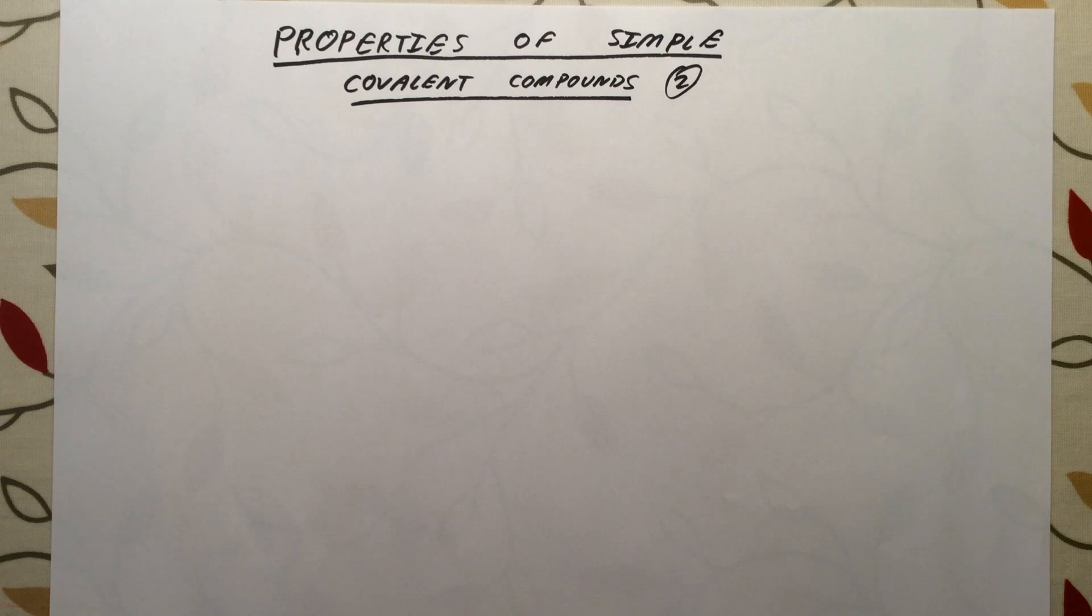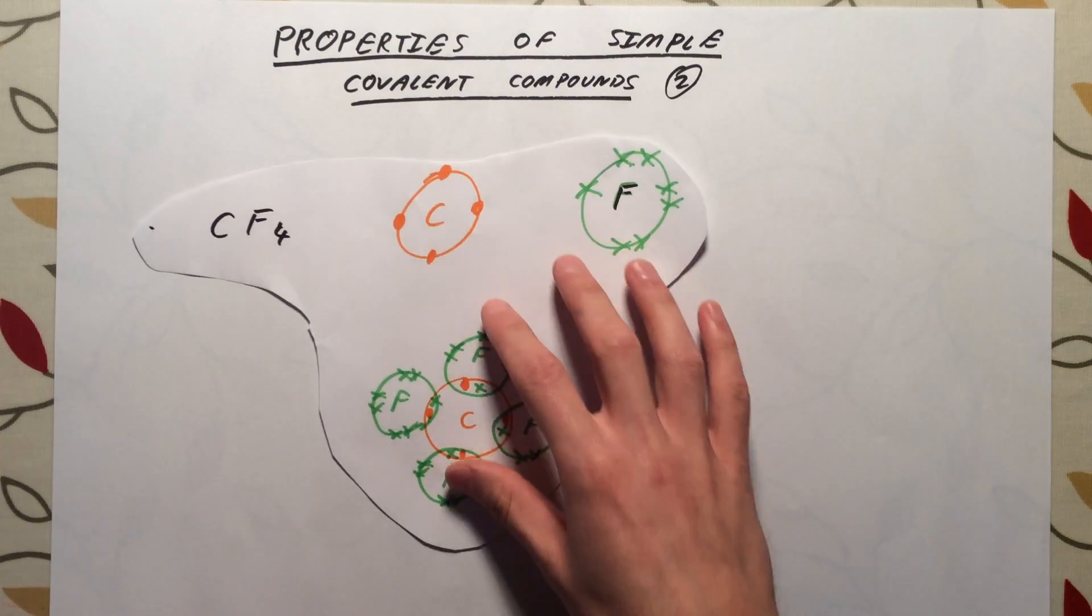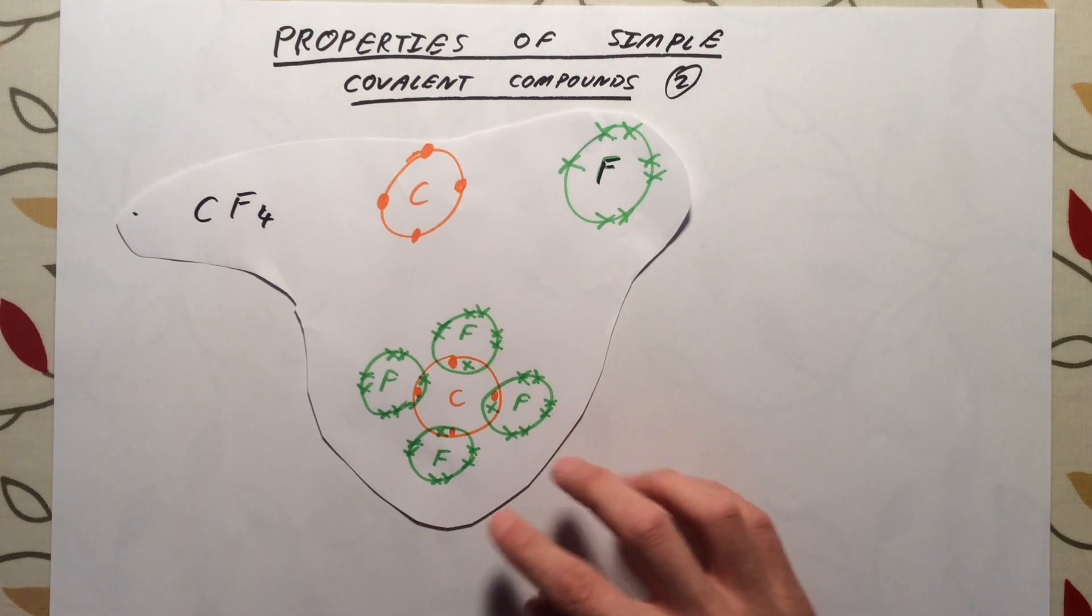In the last video, we looked at how we draw dot and cross diagrams to show how electrons are shared between atoms in simple covalent compounds. We're just going to use one example we looked at there as the basis of this video, and that example is CF4.